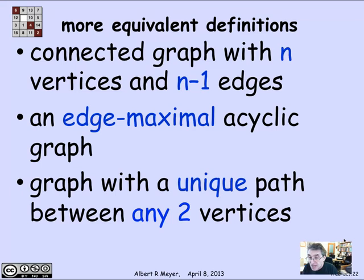So of course, if there's a unique path, in particular there's a path, so all the vertices have to be connected. But what makes it a tree is that there aren't two different ways to connect between two vertices. Because as soon as there were, there would be a cycle.